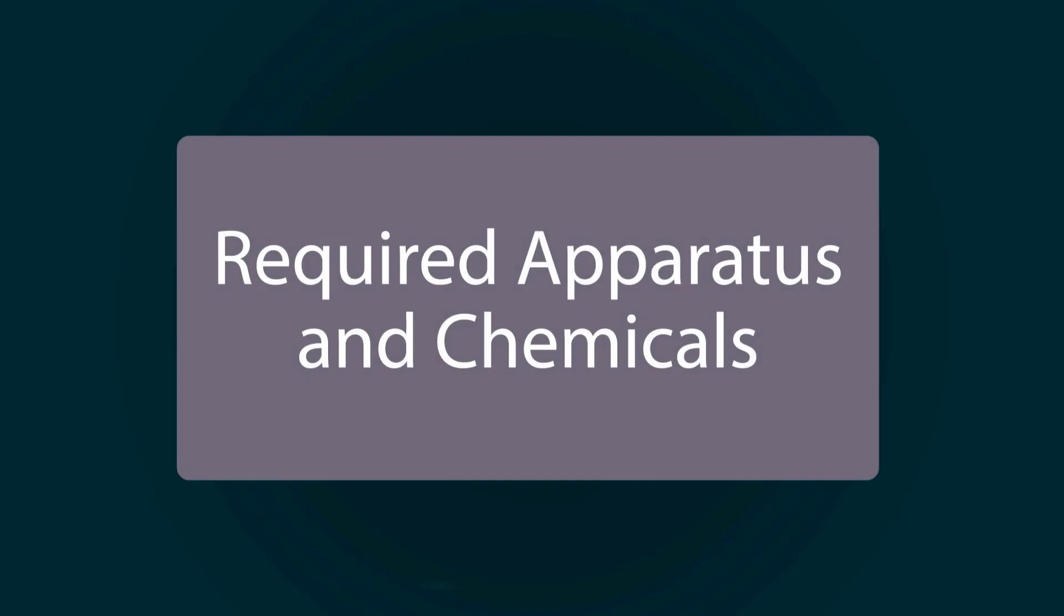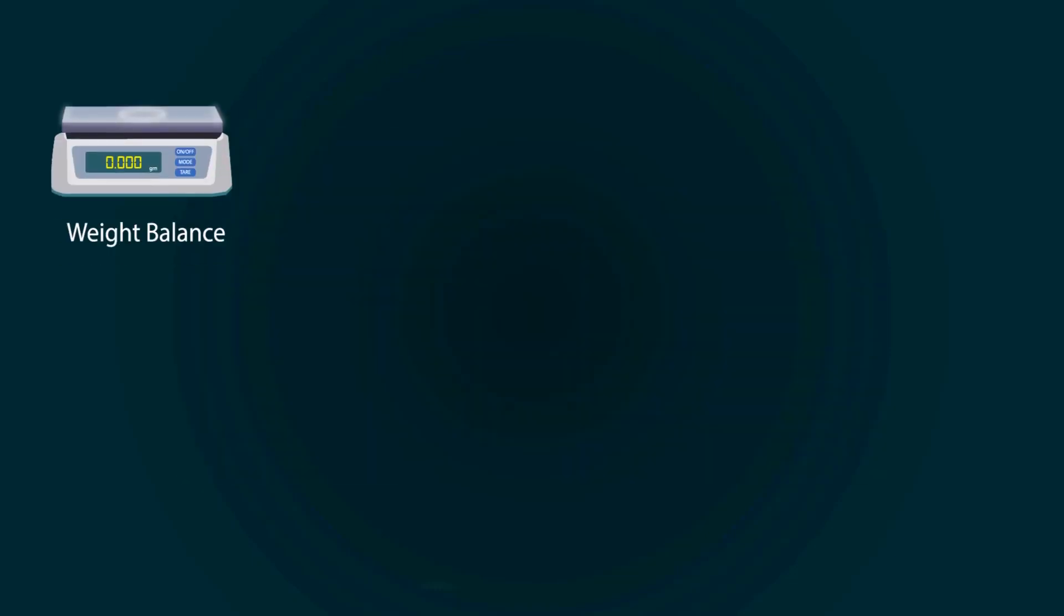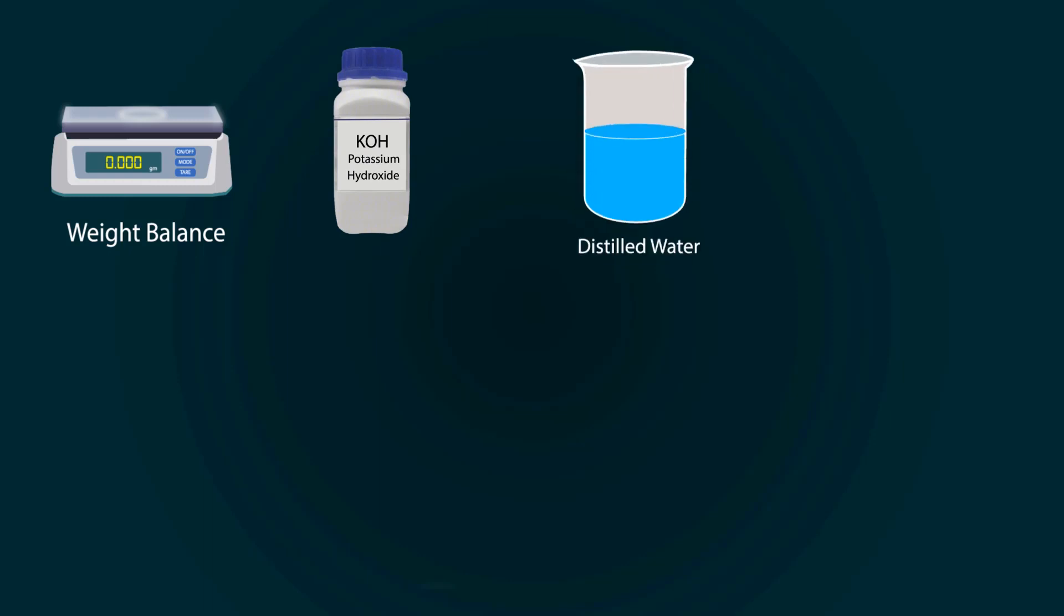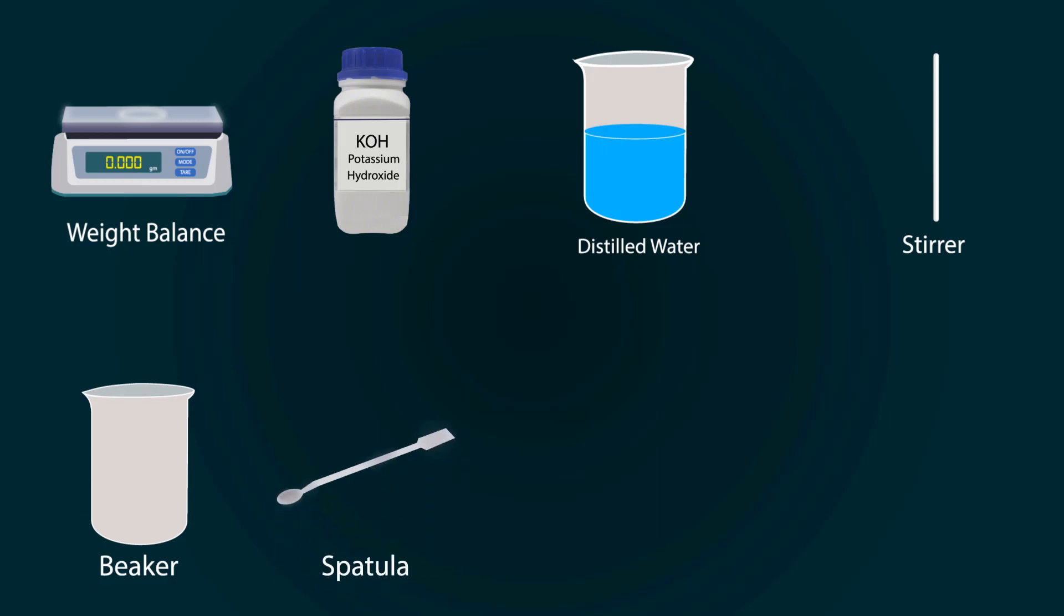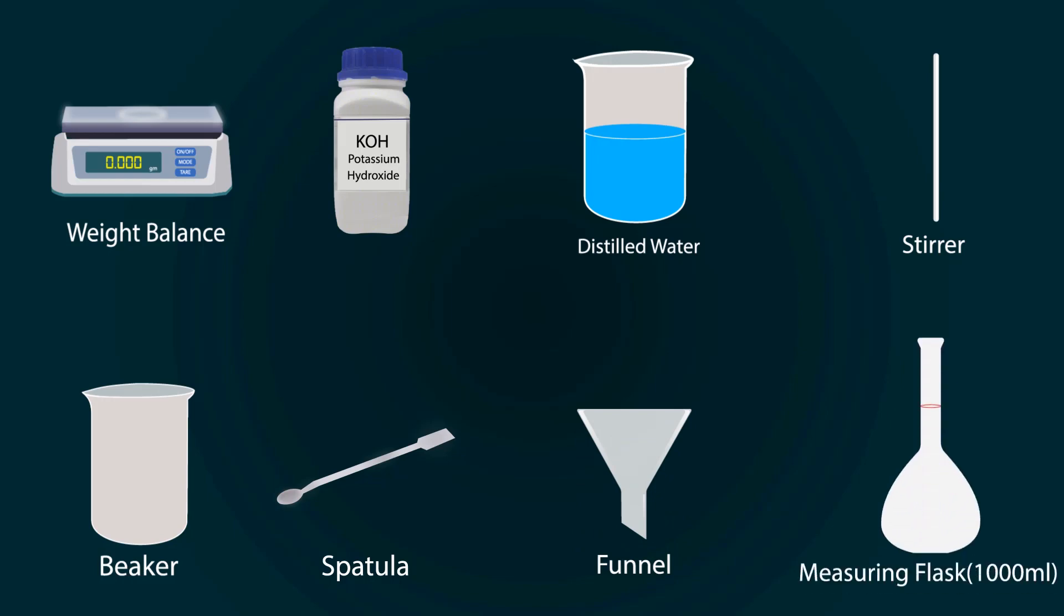Required apparatus and chemicals are: a weight balance, potassium hydroxide, distilled water in a beaker, stirrer, empty beaker, spatula, funnel, and a volumetric flask of 1000 milliliters.